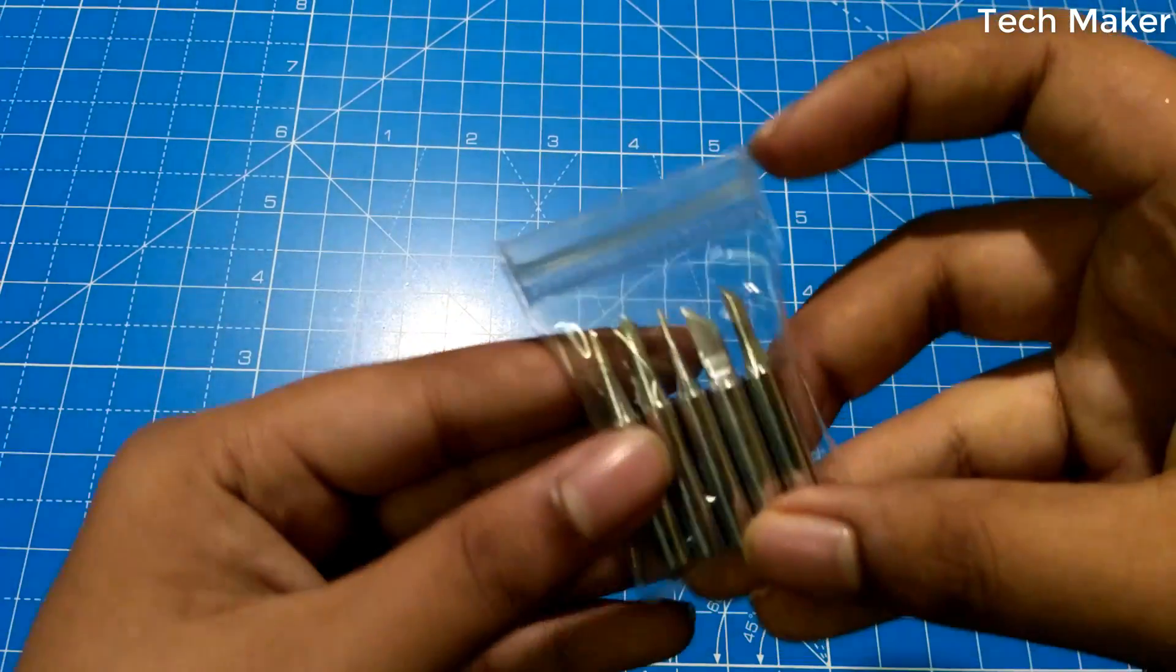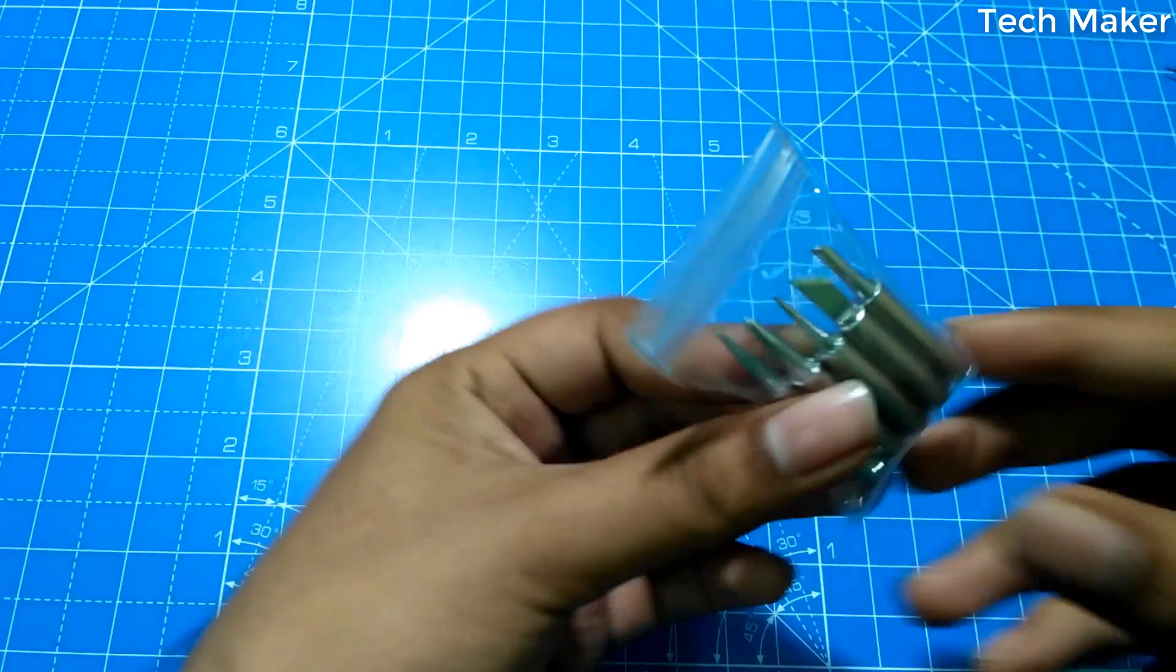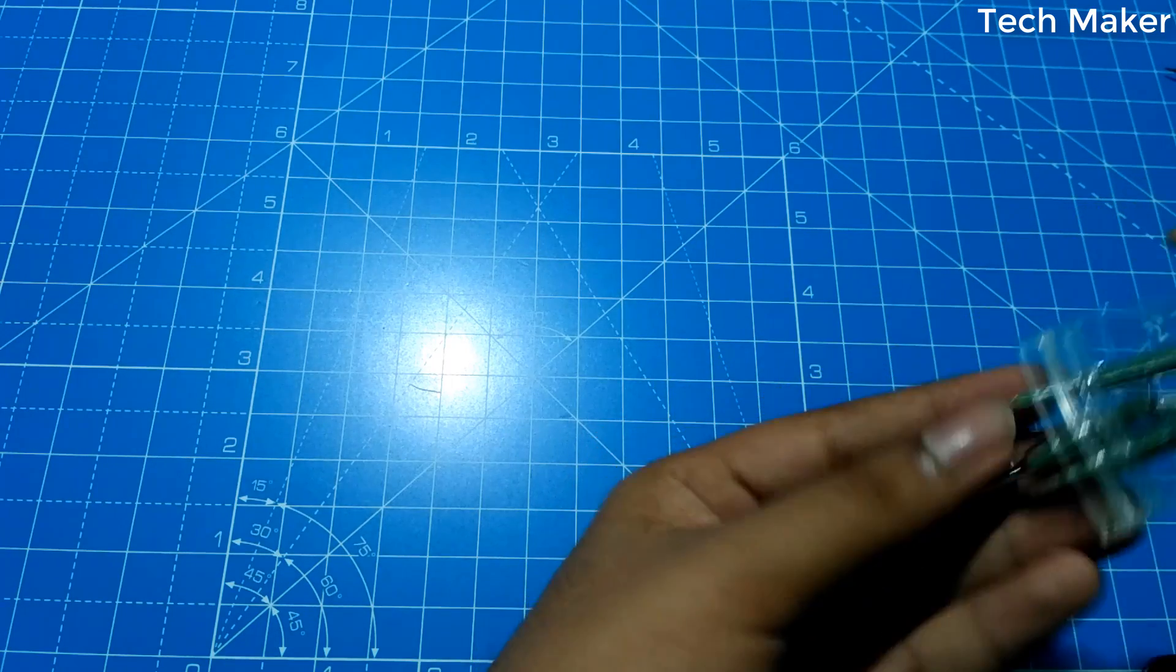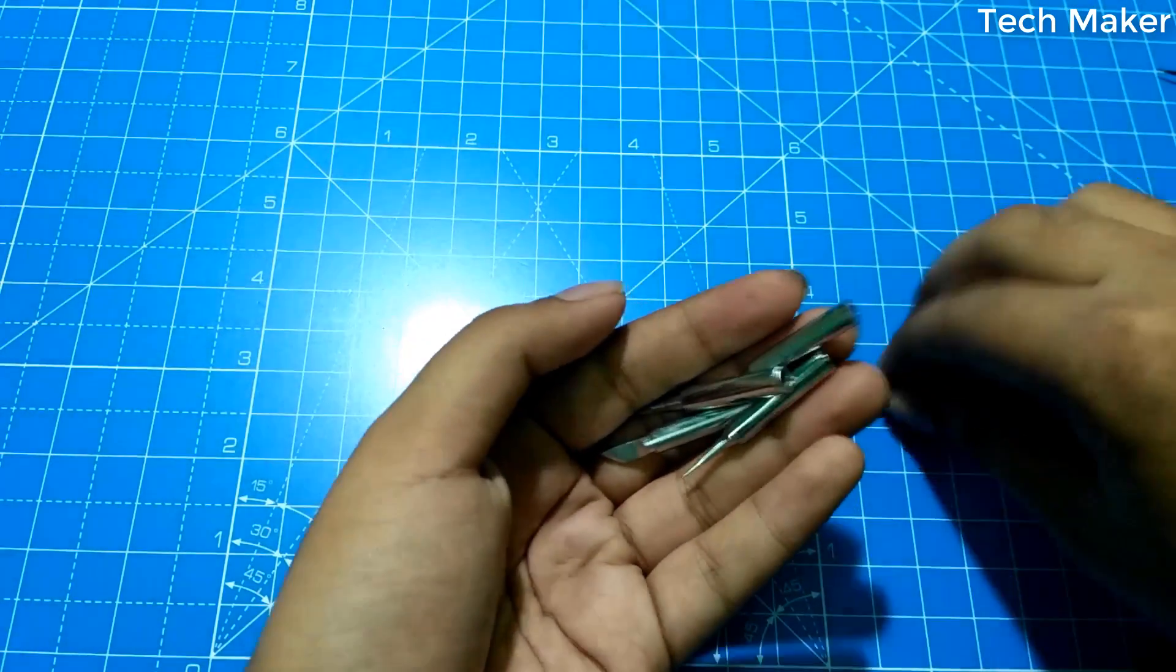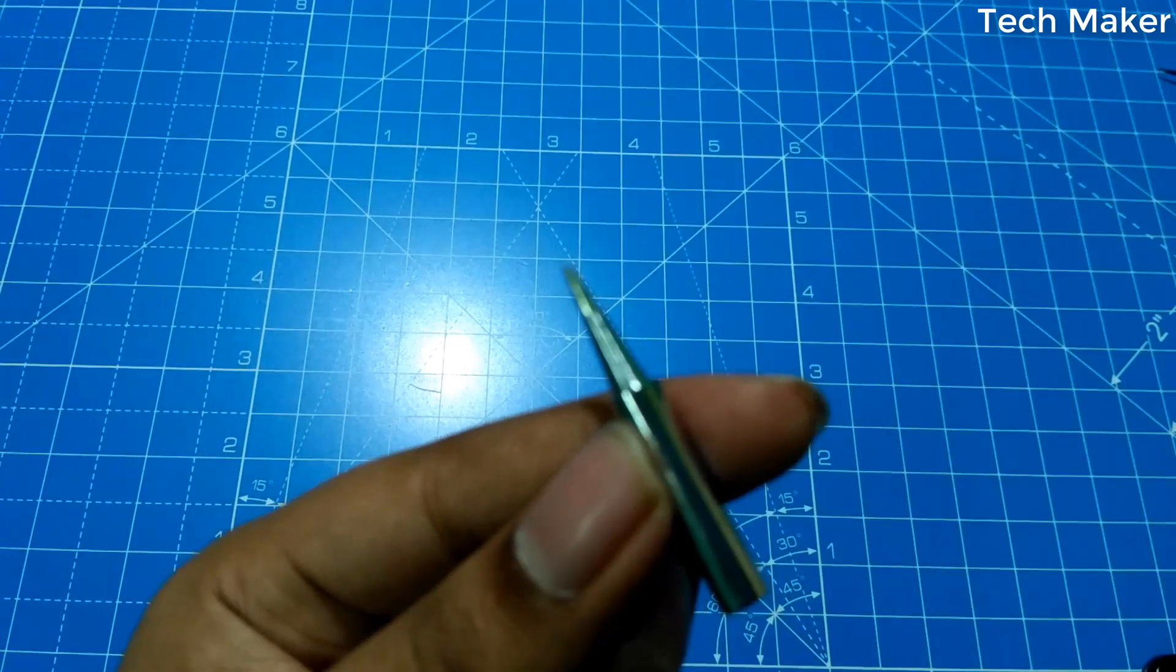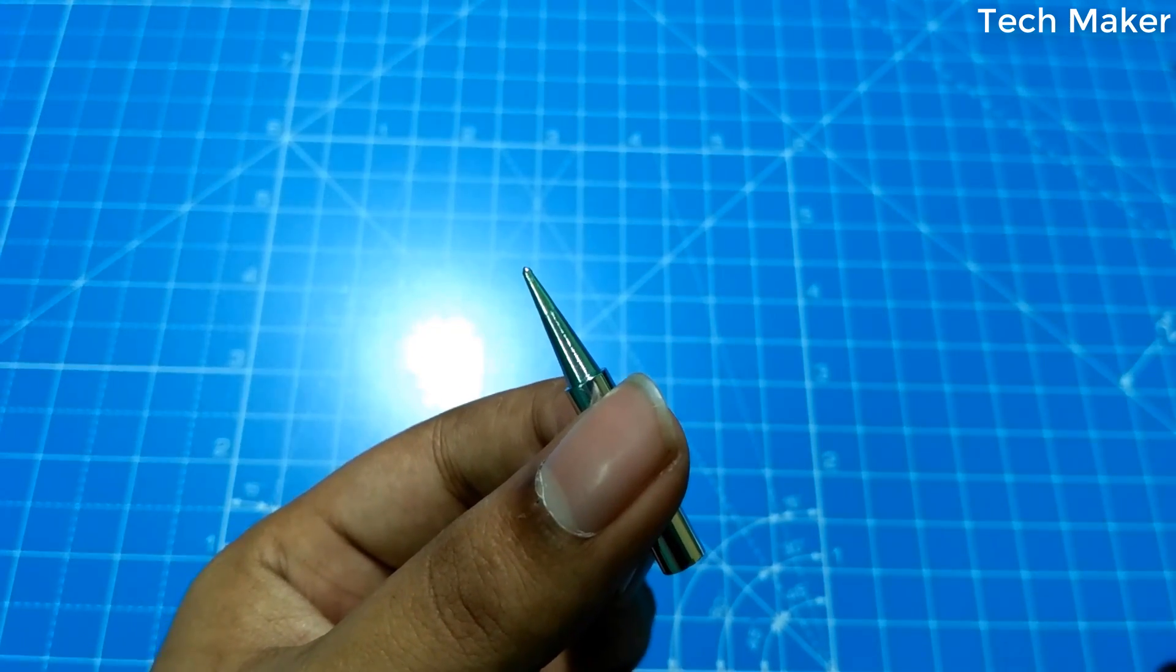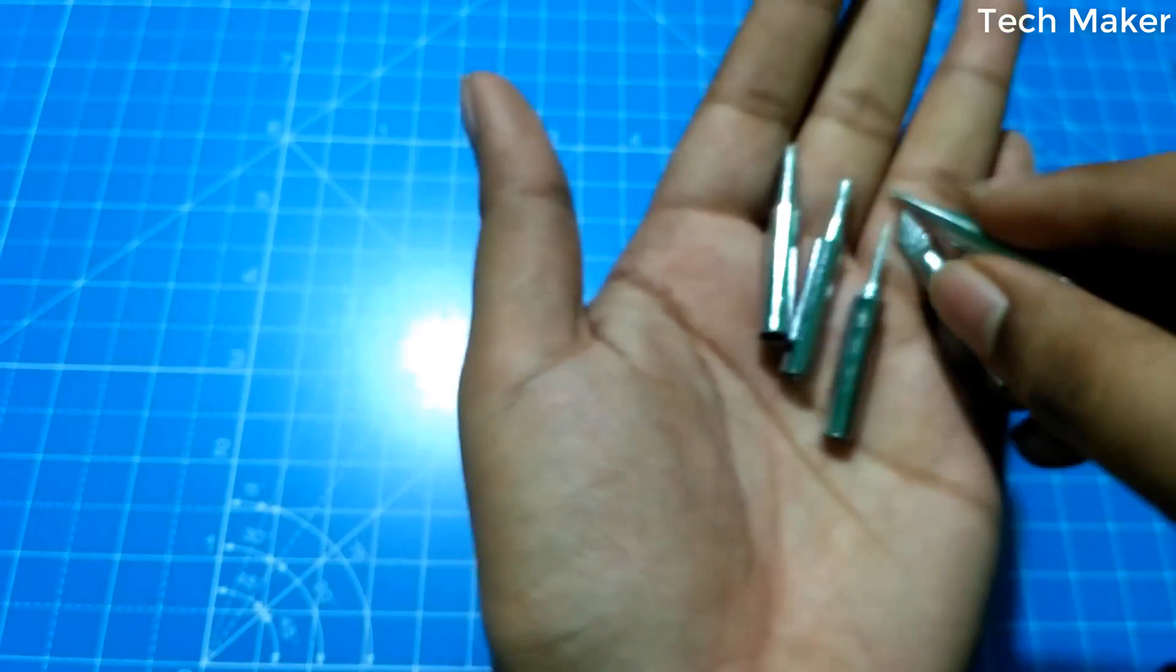Here you can get the additional five tips. According to the purpose, you can replace the tips. You can see here the quality of the tip. Like this, there are five different tips.